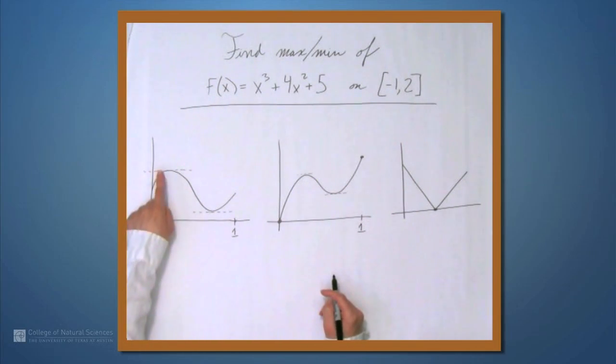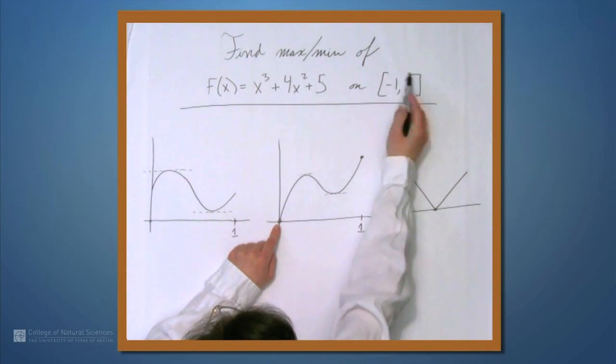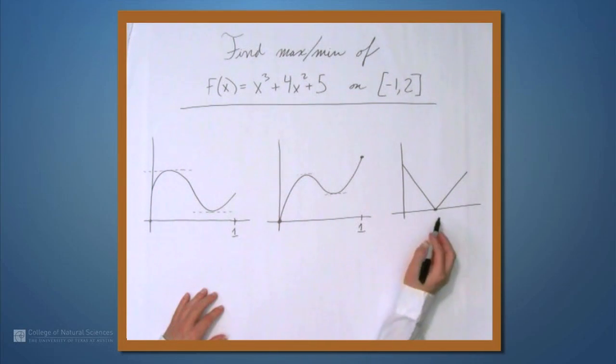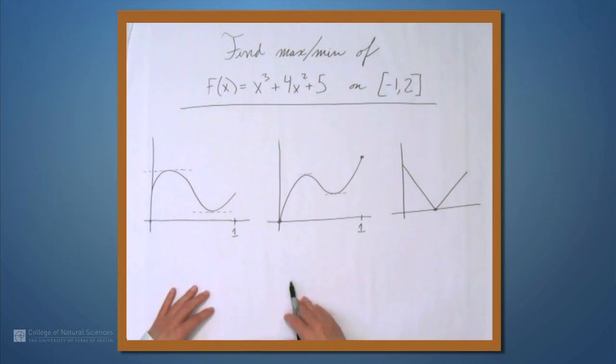So, we have three things in general. Places where the derivative is 0, endpoints of the interval that we're given, and our interval in this case is negative 1 to 2, and any places where the given function is not differentiable. So, with that in mind, let's find the maximum and minimum values of this function.